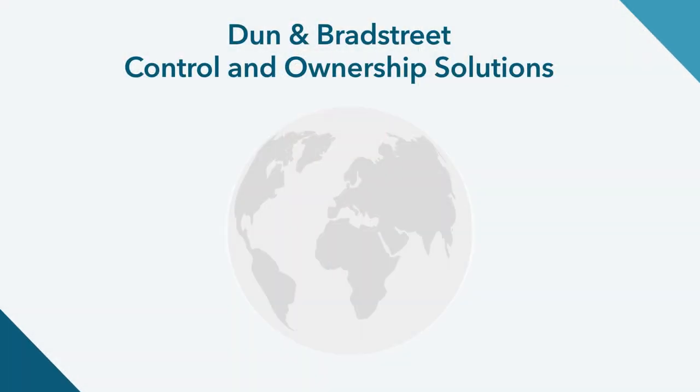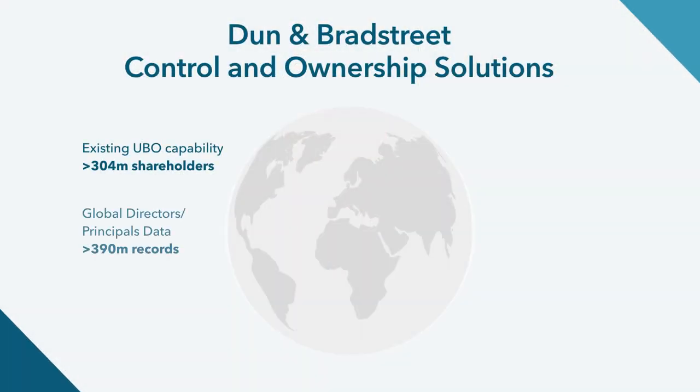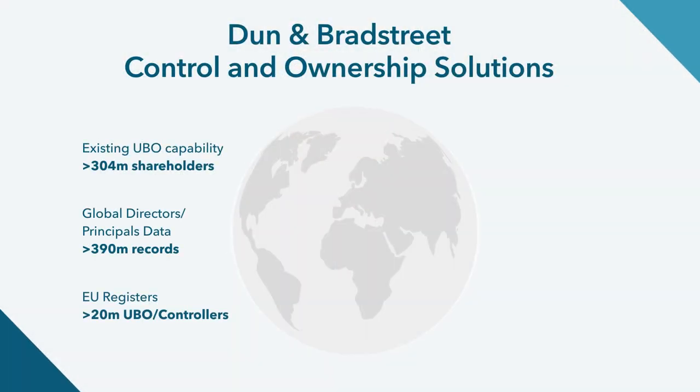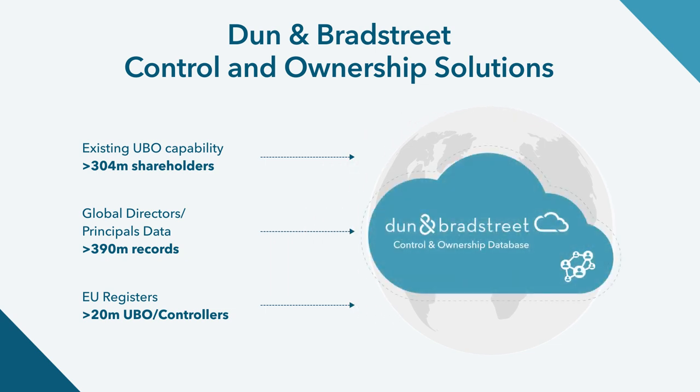So how can you mitigate risk and obtain the clearest and most comprehensive picture? Dun & Bradstreet's control and ownership capability multi-sources information from hundreds of global sources into a single graph database and resolves the duplication of individuals. This presents the clearest view of ownership and control based on publicly available information. We take care of complex situations such as looping structures, aggregation of holdings, and can even run different algorithms based on how you wish to define the thresholds.